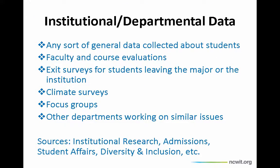We've talked about how you can utilize NCWIT tools to collect data to inform your recruitment and retention strategies, but what about other forms of data that you might have or need? Does your institution or department already systematically collect data useful to your strategic planning? It might be general information collected about students or the department, faculty and course evaluations, or exit surveys for students leaving the major or the institution. Some campuses and departments systematically collect this, and it can be very useful for informing your retention strategies. Maybe there are climate surveys — your department or institution might conduct one, and you can see how your department's climate compares to others at your institution.